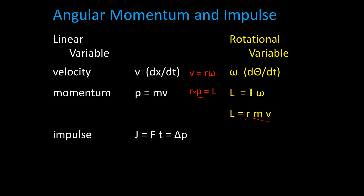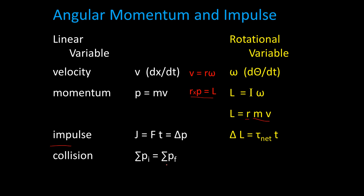Our impulse back in the linear world caused changes of momentum, and it was force times time. In the rotational world, there is really no name for rotational impulse — it's just given the value delta L, and it is the torque times the time. One important area for conserving momentum is in collisions. We assume there's no outside impulse during the collision, and the sum of our angular momenta before equals the sum after, as long as there are no net torques during the short period of the collision.